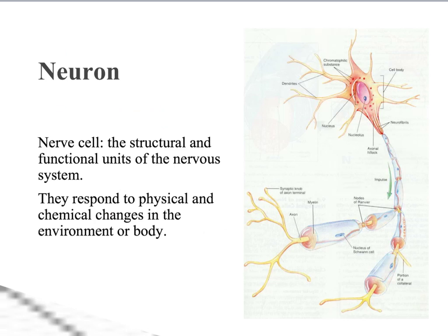This beautiful structure is a neuron — a brain cell, a nerve cell. It is the structural and functional unit of the nervous system. Your nervous system structurally is made primarily of neurons, and functionally, it does the work of what the nervous system does. Your nervous system's job is to send impulses, and neurons are the thing that does that. They are your body's wiring that sends electricity around to get stuff done.